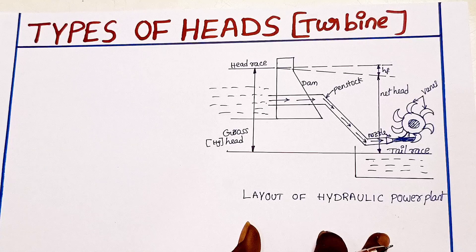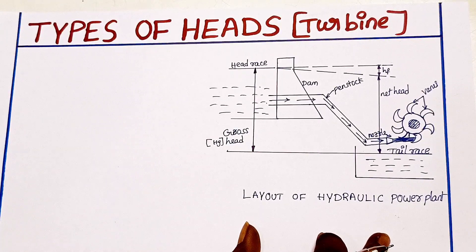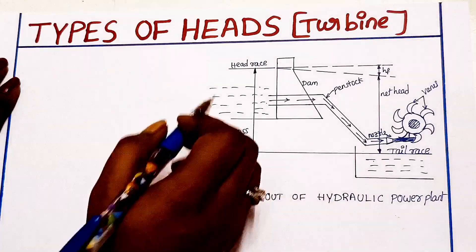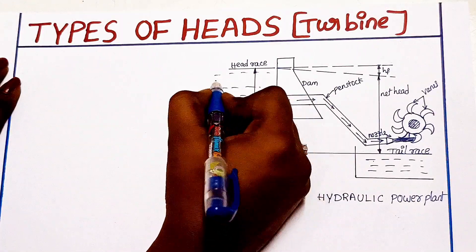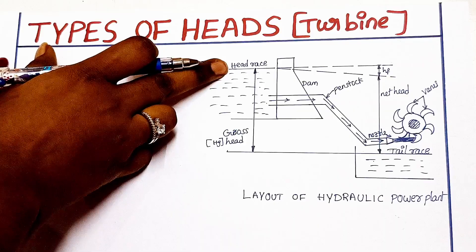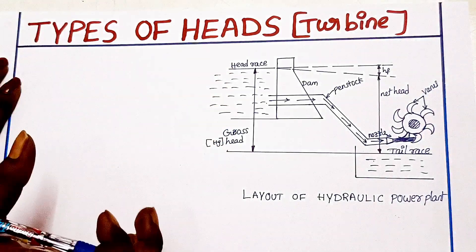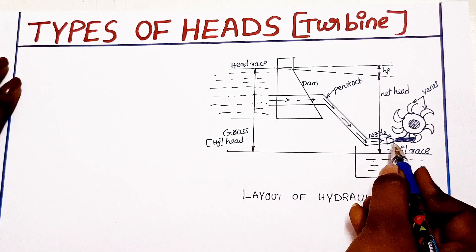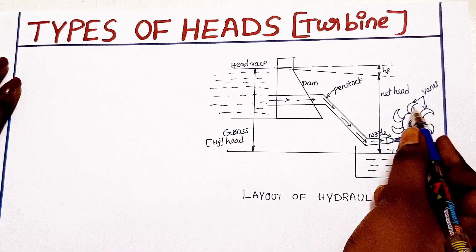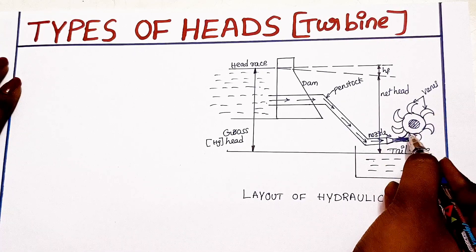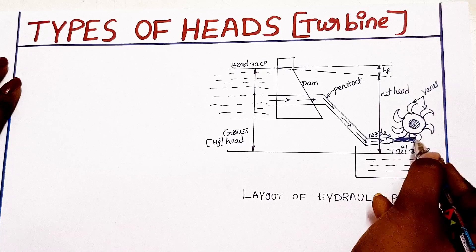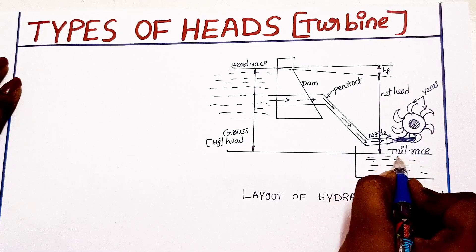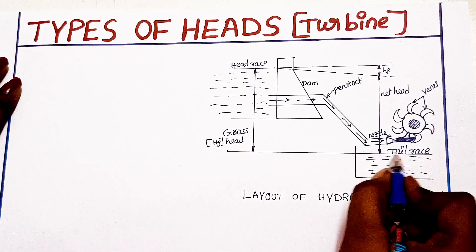The next component is the headrace — the channel that carries water toward the turbine. The tailrace is the channel that carries water away from the turbine after it has passed through.